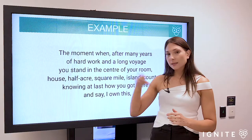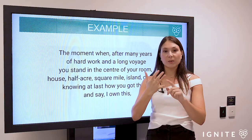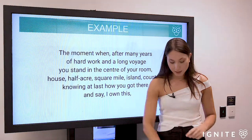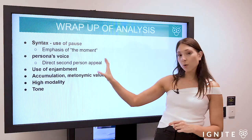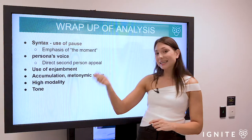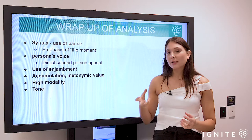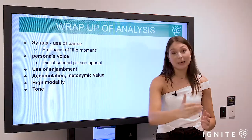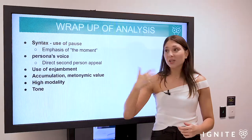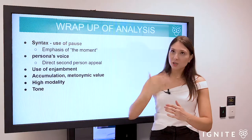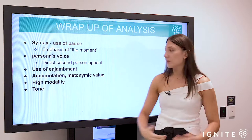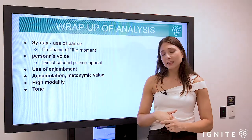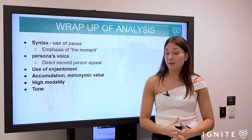Looking back on that stanza, the aspects of oral analysis did help us in terms of persona's voice, the enjambment and how that shaped the rhythm, and then I picked up a few other candid bits of analysis — particularly the accumulation and the metonymy. To list them clearly: we looked at the syntax and use of pause and how that emphasized the moment; we considered the persona's voice, particularly the second person appeal, and how that drew us closely into dialogue with the persona, encouraging us to consider how it would feel to have a connection to land. The enjambment increased the pace, potentially conveying a rant-like tone exploring this connection to land disrupted by colonization. The accumulation and the metonymic value of being connected to your room speaks to national identity, and the high modality in the ending — 'I own this' — conveyed the overall tone of connection to land in the opening stanza.